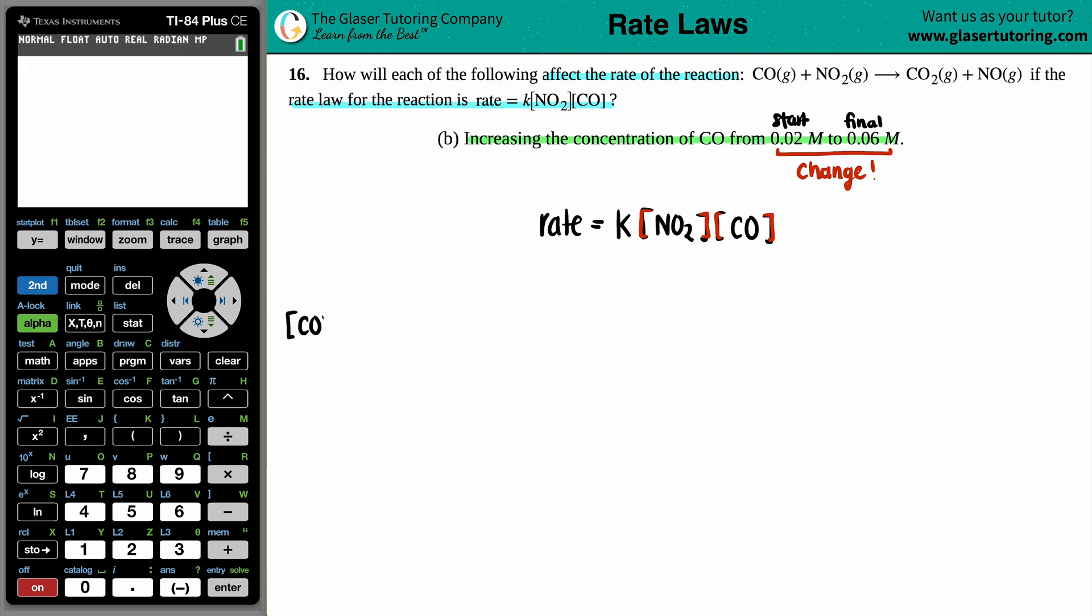So if my initial concentration or my initial molarity for CO was 0.02, and I am now at a concentration of 0.06, how did I get there? And when you're dealing with changes, you always deal with either multiplication or division, but never addition and subtraction. So we say to ourselves, okay, if I started off with 0.02, by multiplying or dividing, will I get to 0.06? Did you say times by three? 0.02 times three is 0.06.